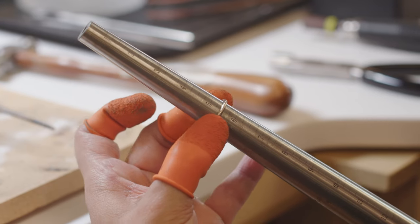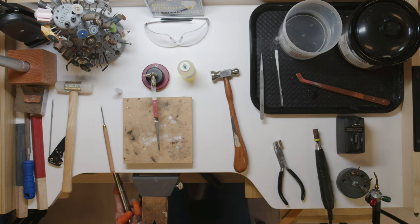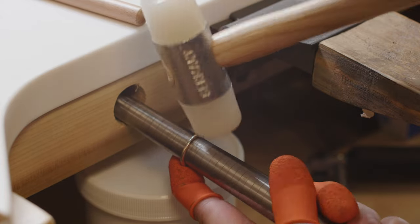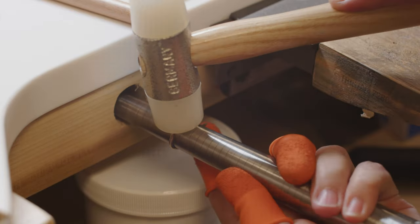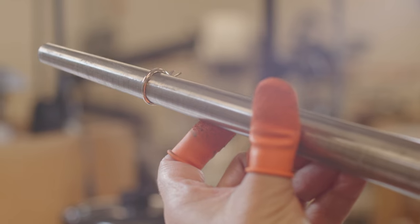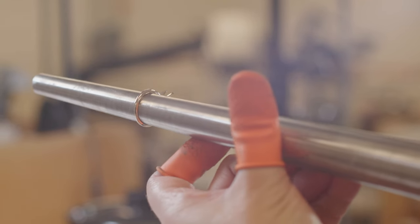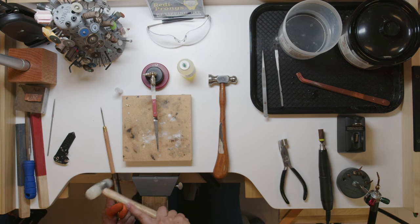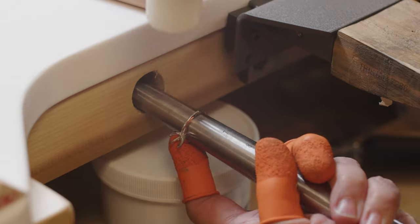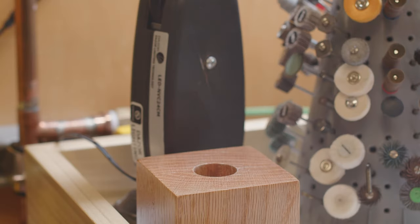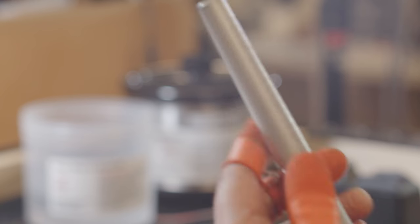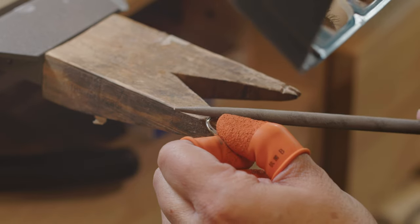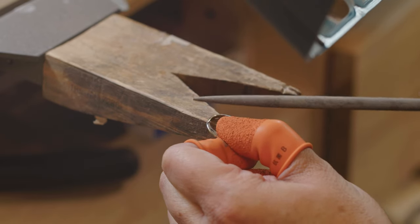You want to use a steel mandrel when rounding out, using light pressure with a nylon hammer. You don't want to see any daylight. You want to use an aluminum mandrel when checking the size, making sure that the ring is falling right above the line because you still have to polish it. I'm just going to smooth out the little high spots using the file.